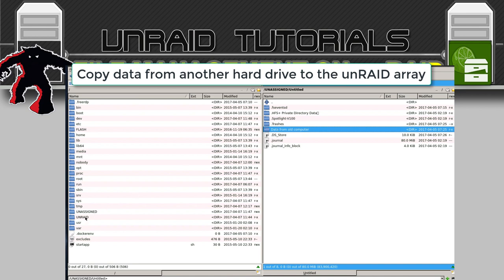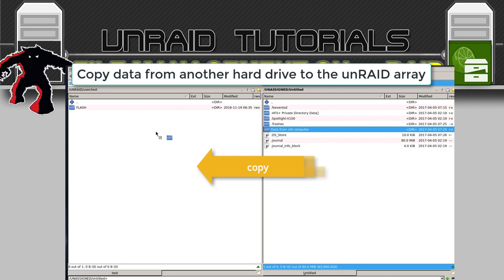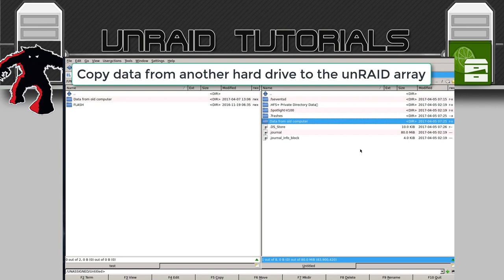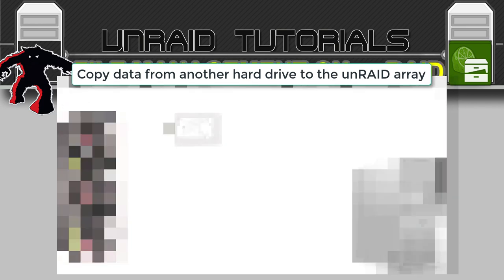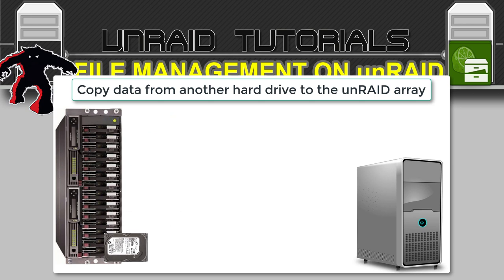I'll click onto UNRAID to look at the UnRAID devices, click on user, open up my test share, then drag the folder across and click Copy. I just need to wait for it all to copy across. The data is now transferred from the external hard drive onto my UnRAID array. We could either disconnect and remove the hard drive, or leave it in and run a pre-clear. If you don't know what pre-clear is, please watch my video on pre-clearing discs in UnRAID. Once done, we can add it to the array to expand its size.